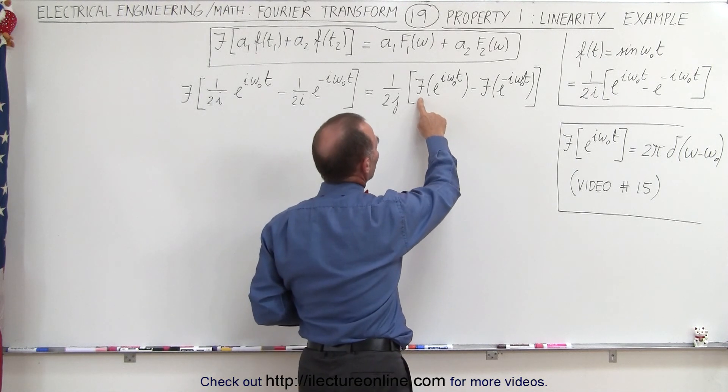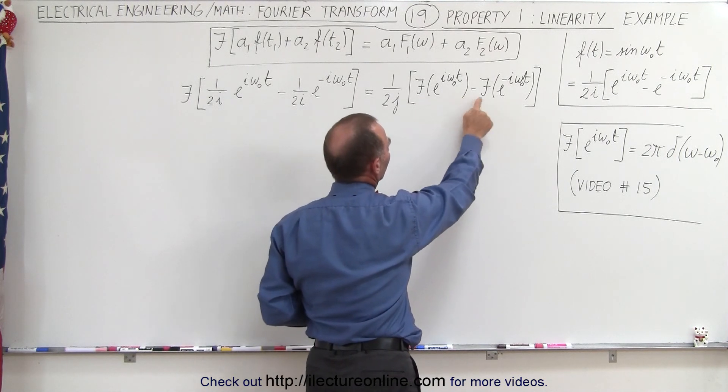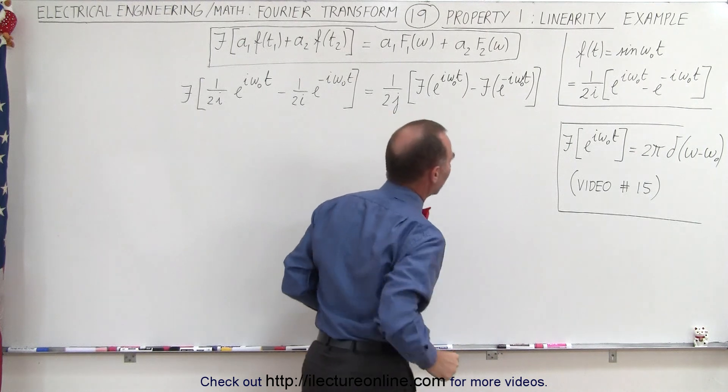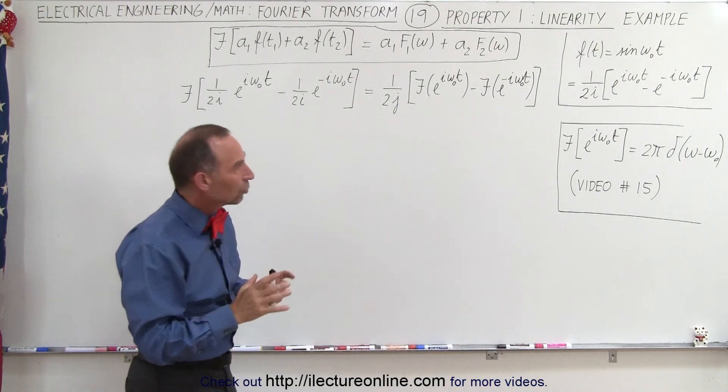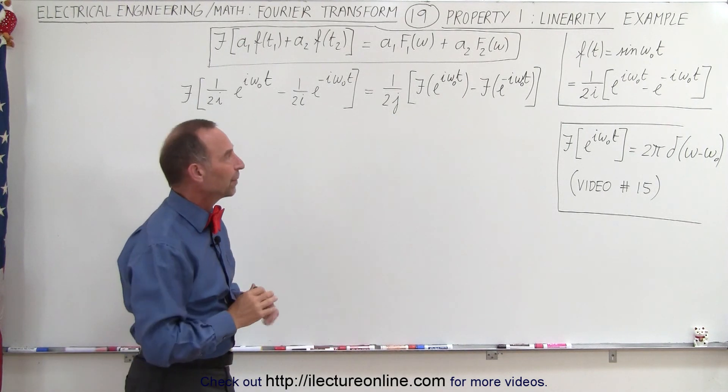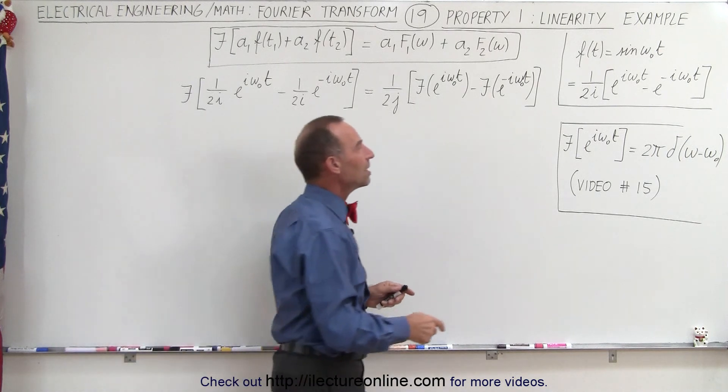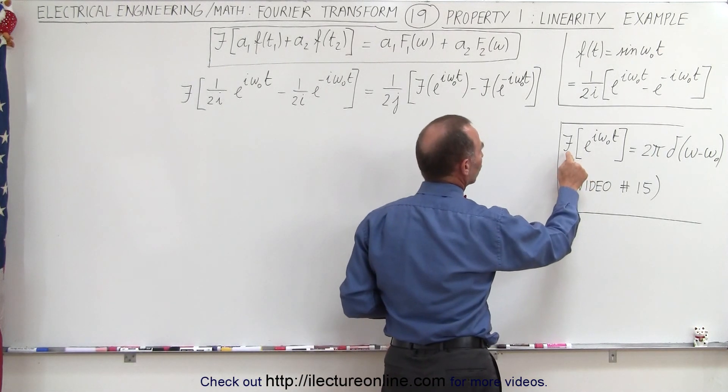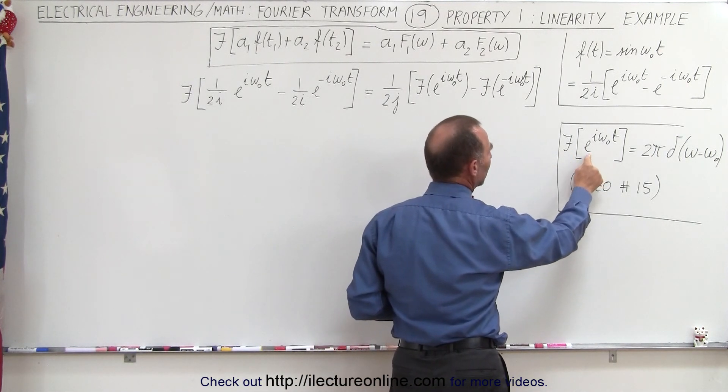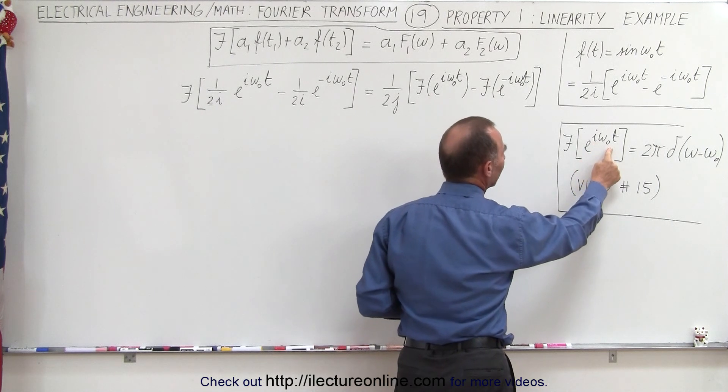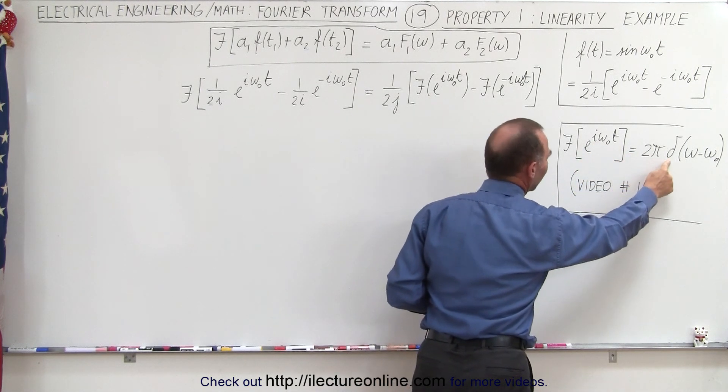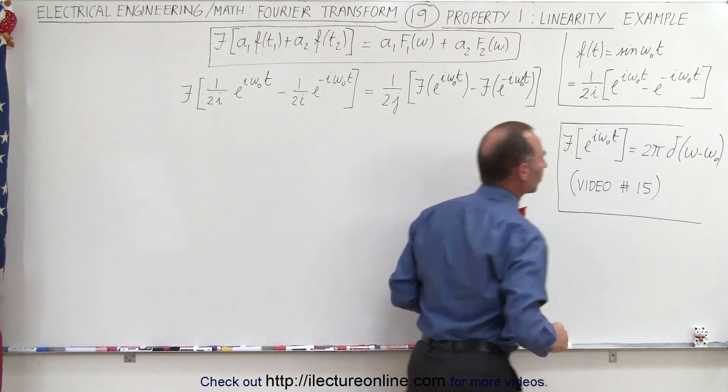Notice we have the Fourier transform of the first input function minus the Fourier transform of the second input function. Something should look familiar here. If you go back to video number 15, that's where we learned that the Fourier transform of e to the i omega t is equal to 2 pi times the delta function of omega minus omega naught.